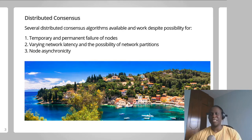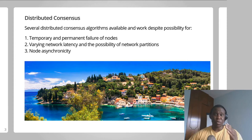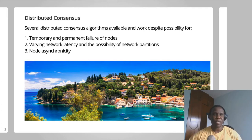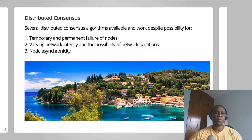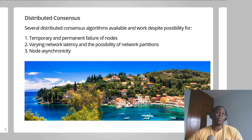Because consensus in distributed systems is not a trivial problem to solve, several algorithms have been created to tackle it. Most of these algorithms assume that the nodes in a distributed system may fail temporarily or permanently. They also assume that the network connecting the nodes can have varying latencies, and there is a possibility of network partitions — where different sections in a network are unable to reach each other for some time. The algorithms also assume that nodes might have varying computing power and varying system clocks. For example, you can have two nodes A and B where A is a beefy server and B is a not-so-beefy machine. A's system clock might be synchronized with an NTP server and B's system clock might not be synchronized at all.